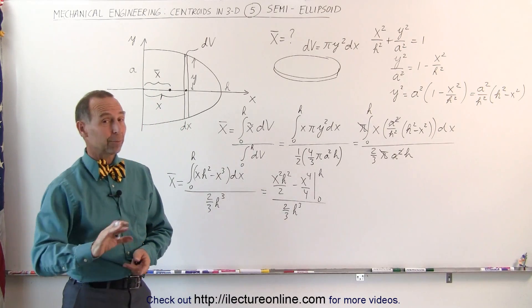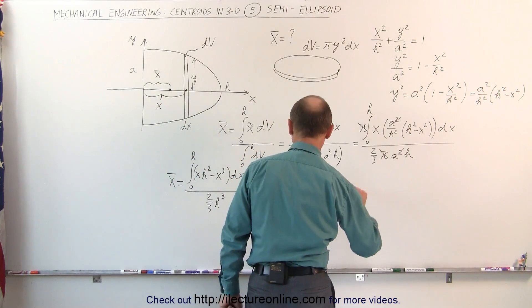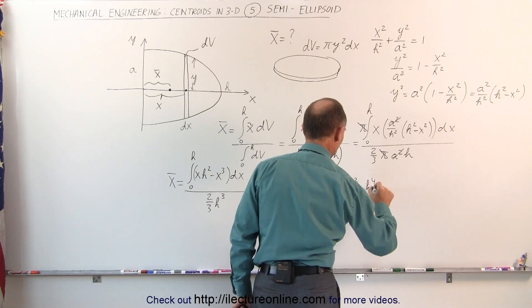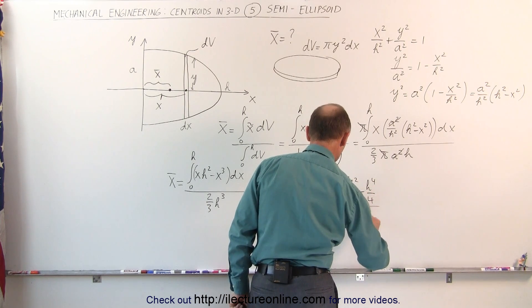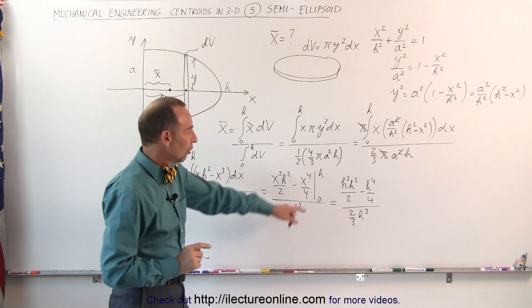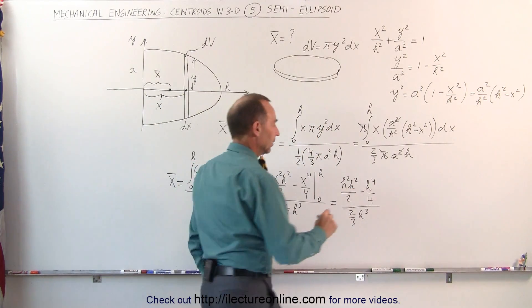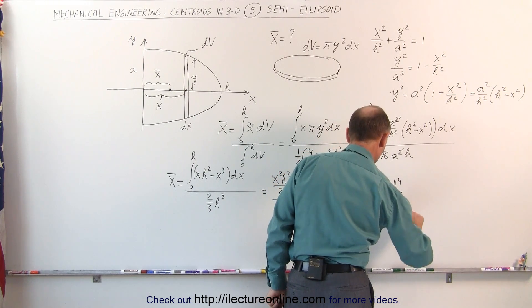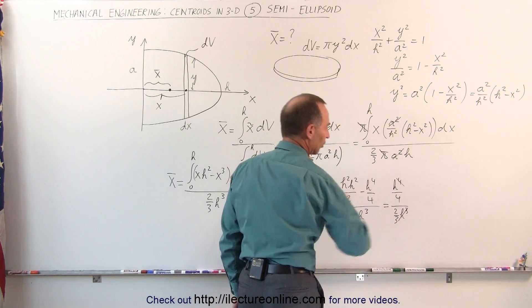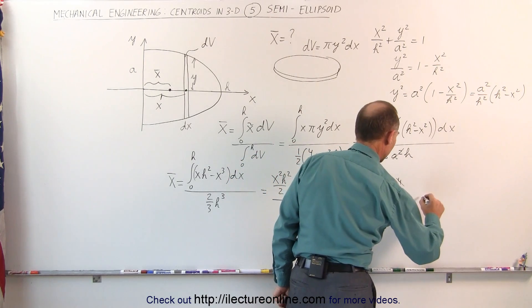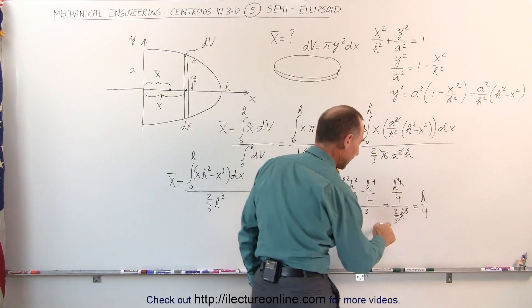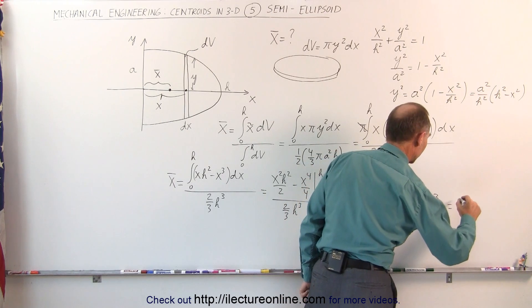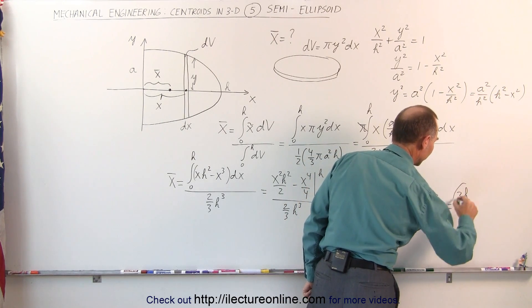Plug in the upper limit, because we don't have to plug in the lower limit, we get 0. Plug in the upper limit, we get h²(h²)/2 - h⁴/4, the whole thing divided by 2/3 h³. Now you see that we have h⁴/2 and h⁴/4. This becomes h⁴/4 divided by 2/3 h³. So h³ cancels out with h⁴. That leaves us with h/4. Divide by 2/3 is the same as multiplying by 3/2. And the h³ is gone, which eventually leaves us with 3h/8 as the final answer.